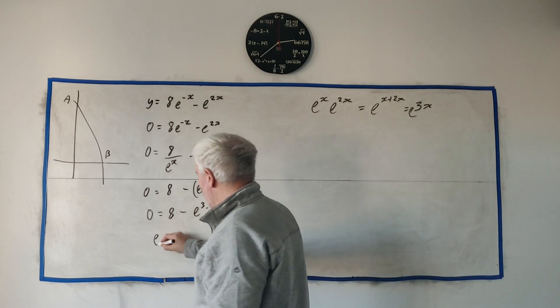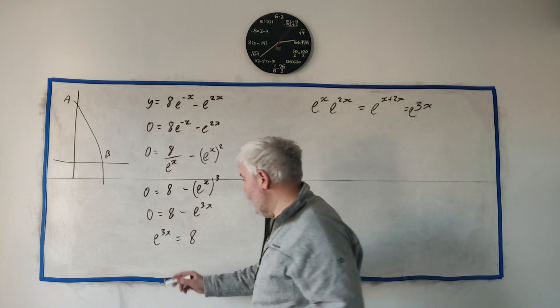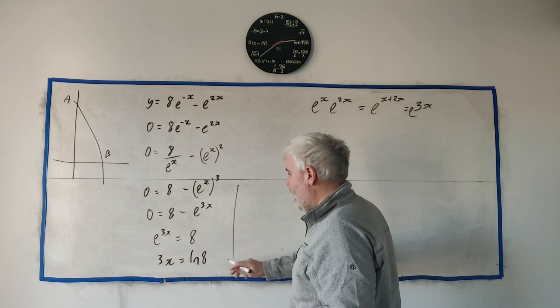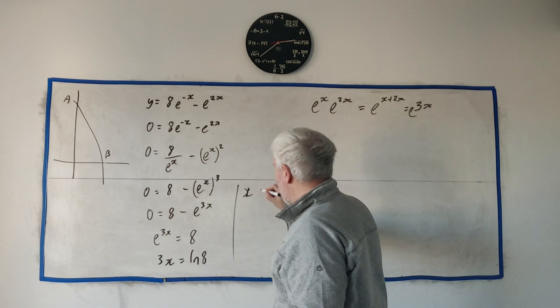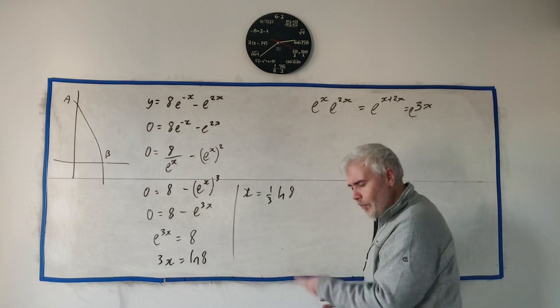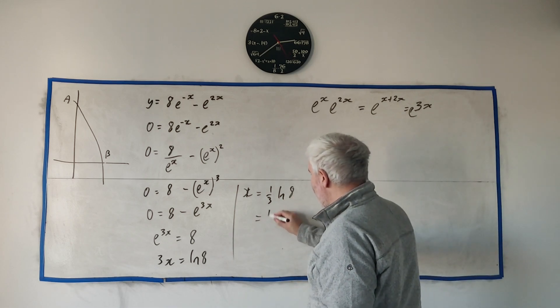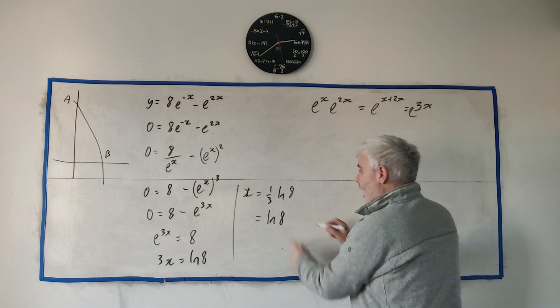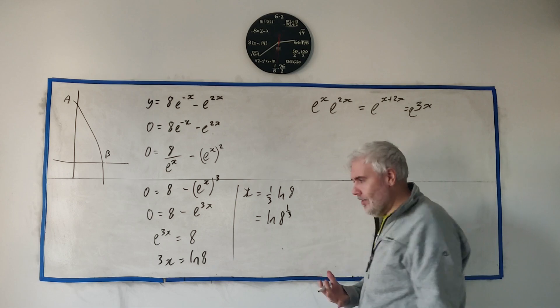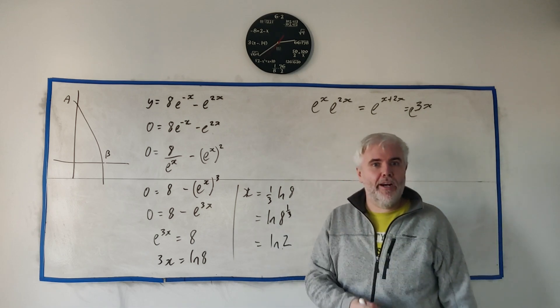At this point we just start to solve it. e to the 3x is equal to 8. Take the natural log of both sides. We get 3x equals natural log of 8. Divide both sides by 3. We get x equals 1 over 3 natural log of 8. And then remember another rule of logs. Anything multiplied by log is the same as that number going to the power of it. So 8 to the power of 1 over 3. That's the cube root, so that's natural log of 2. That's the answer to the first part of part B.